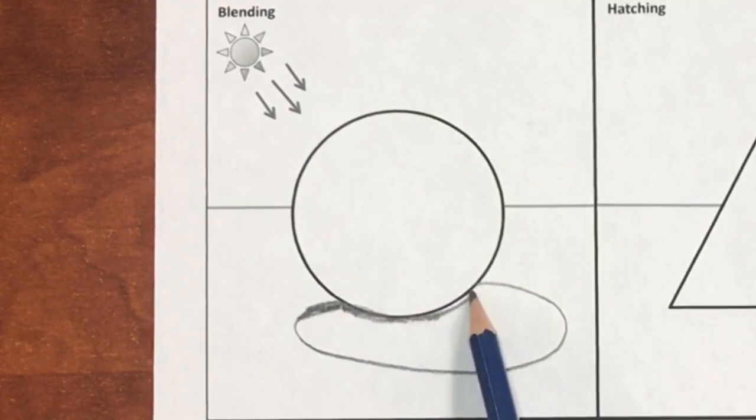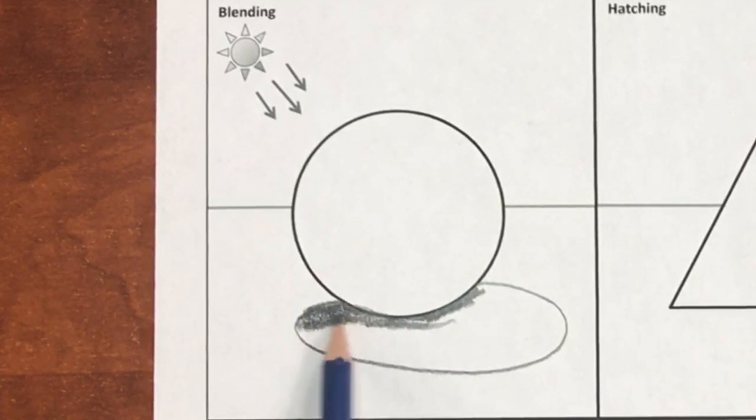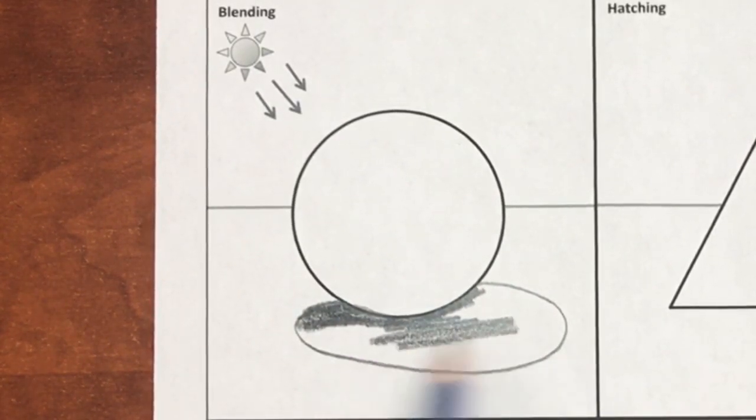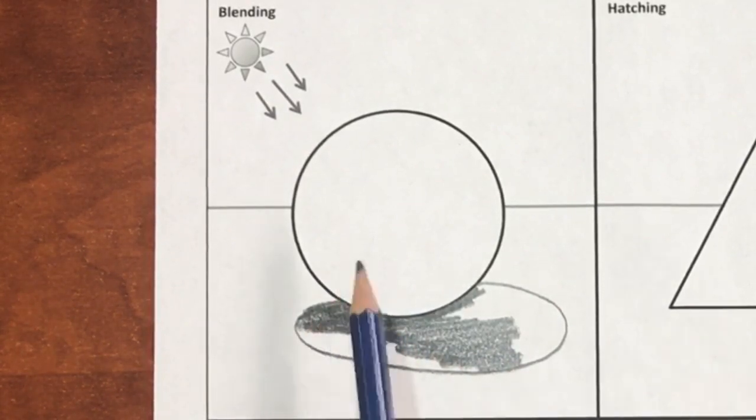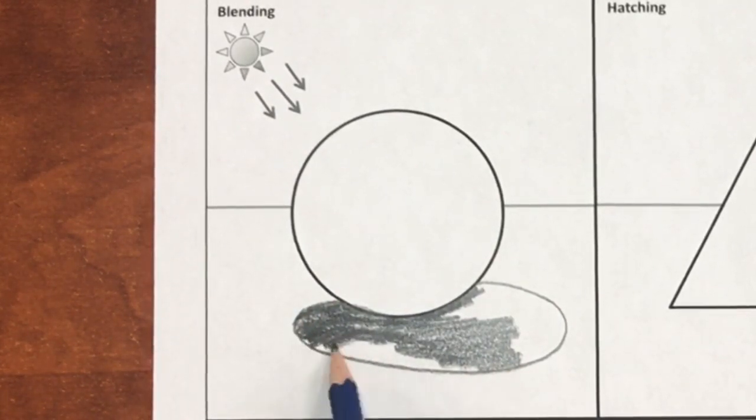Chiaroscuro is a technique for adding value to create the illusions of three dimensions. The general rule of chiaroscuro is that in this system, if light is coming from one direction, then the light and shadow will conform to a set of rules.